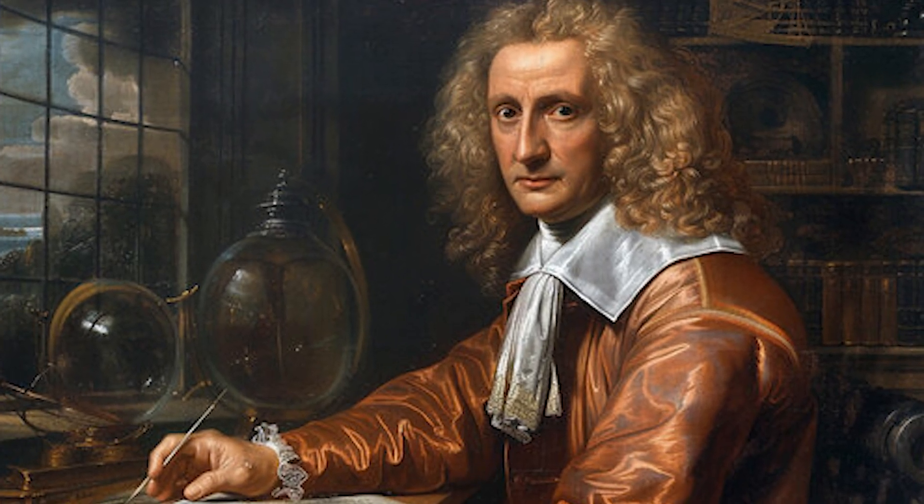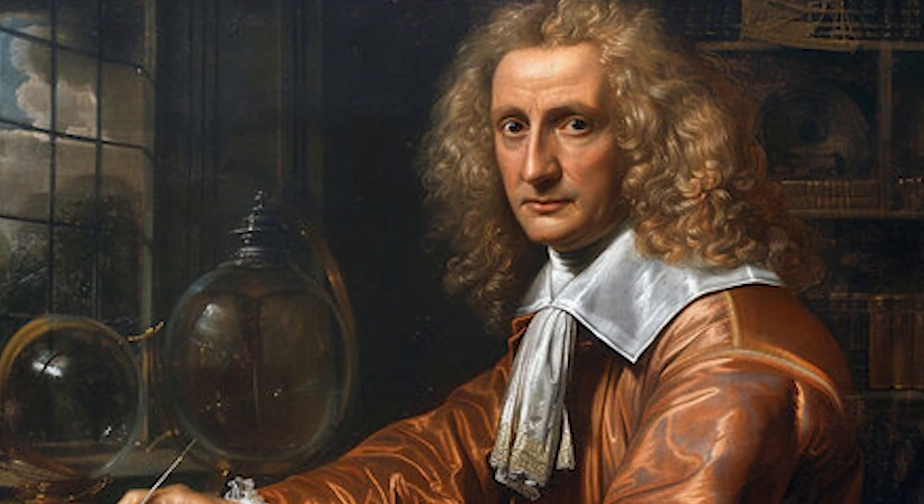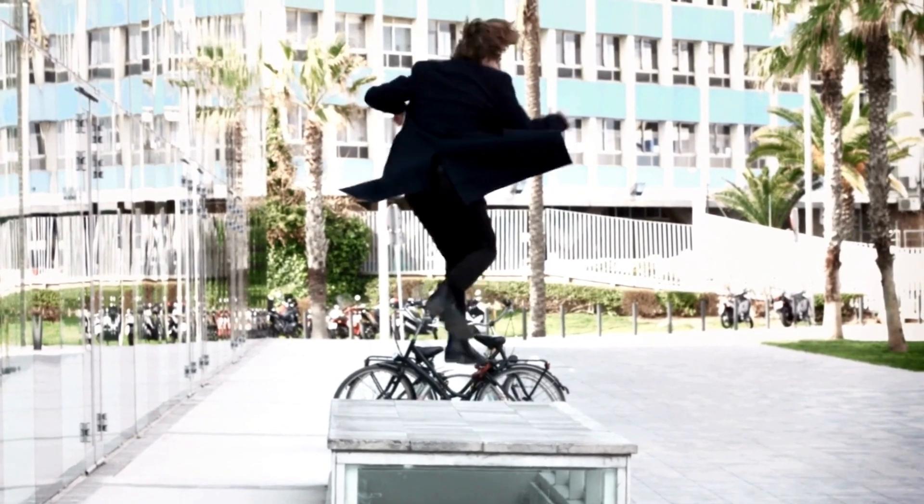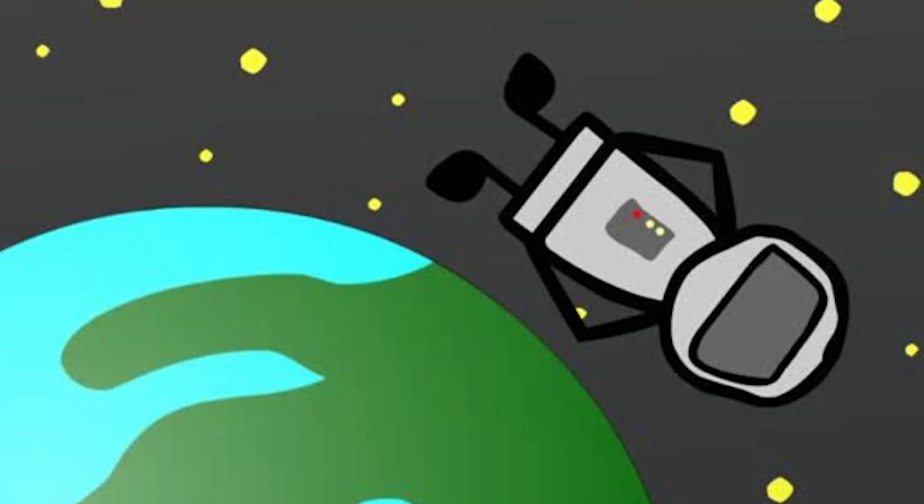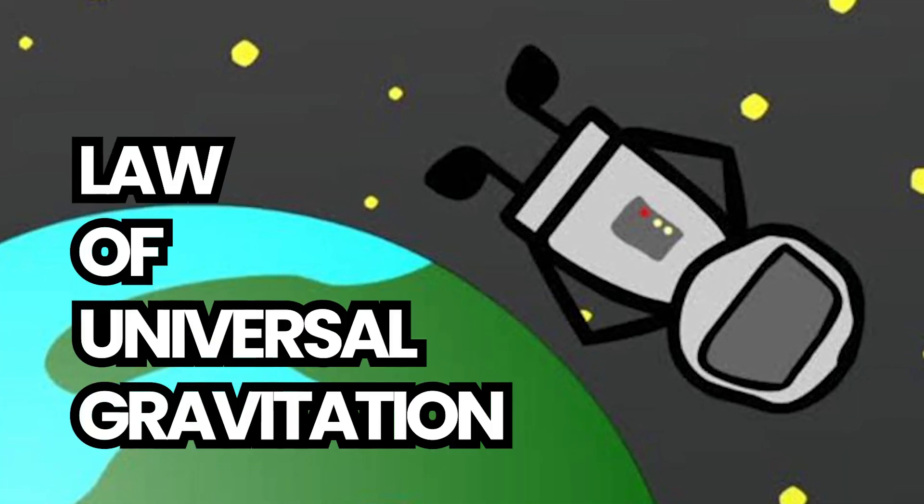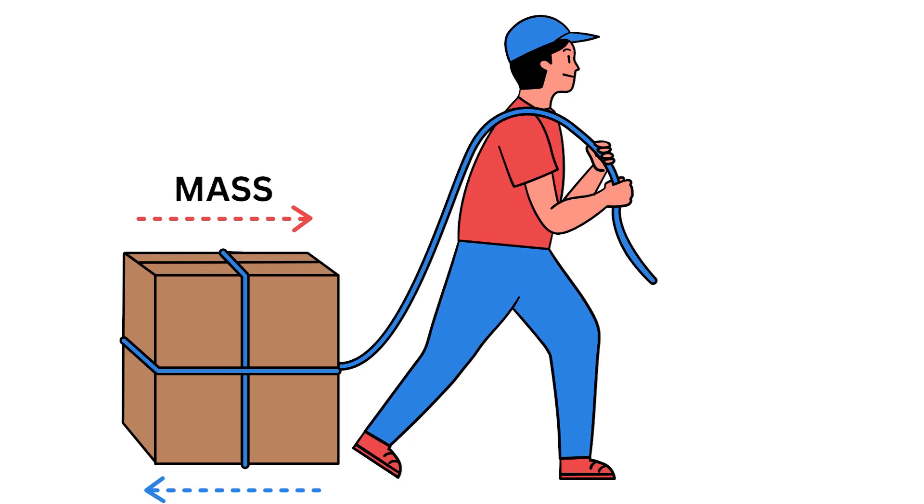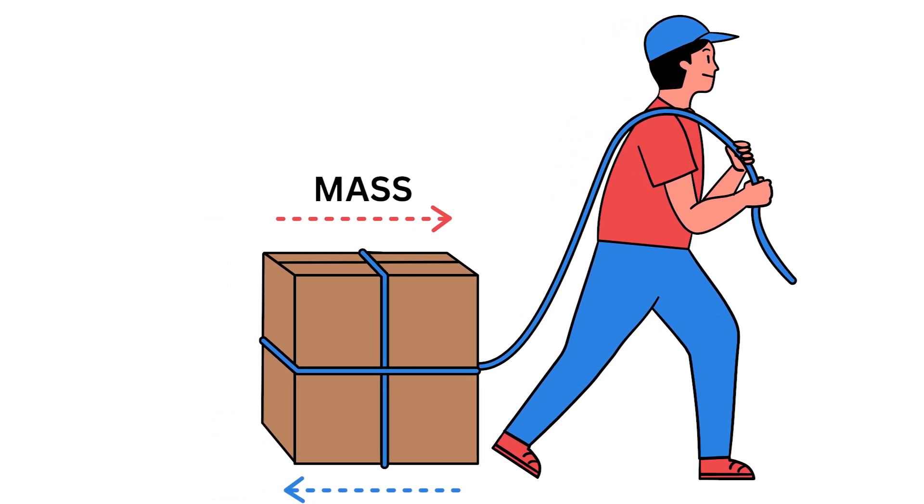And while Newton was on a roll, he also figured out why we're not floating off into space every time we jump. His law of universal gravitation tells us that every object with mass pulls on every other object with mass.